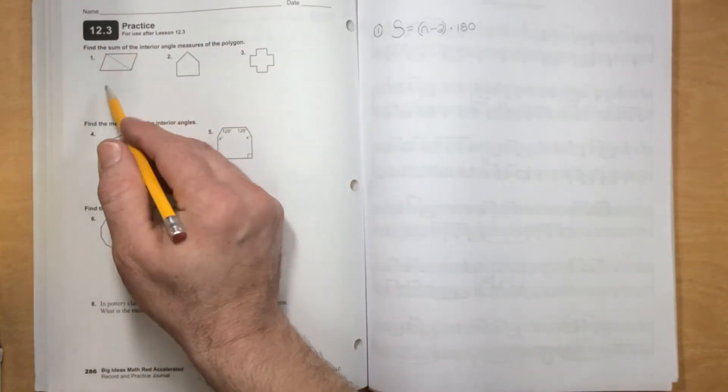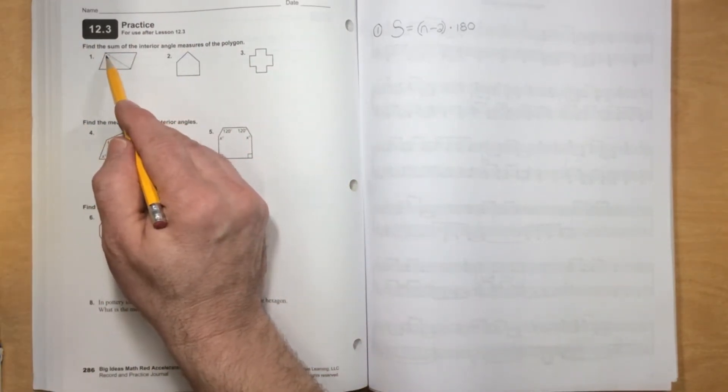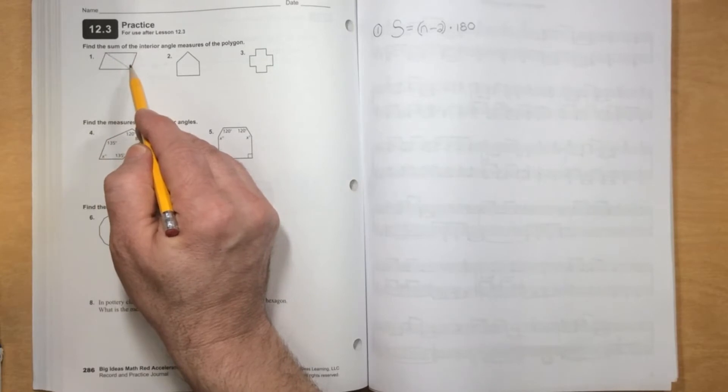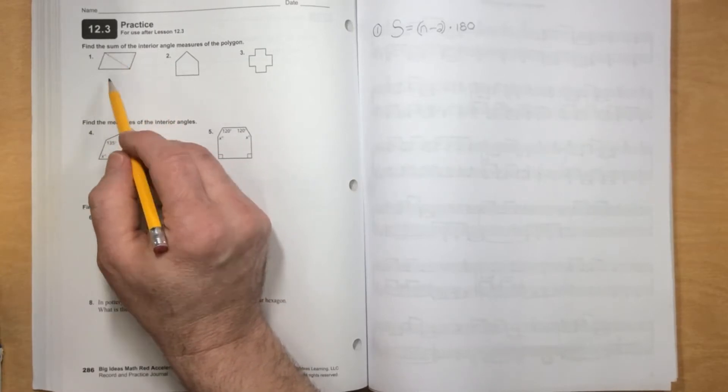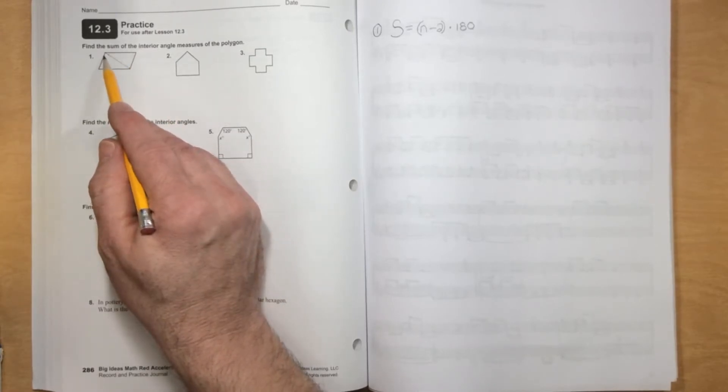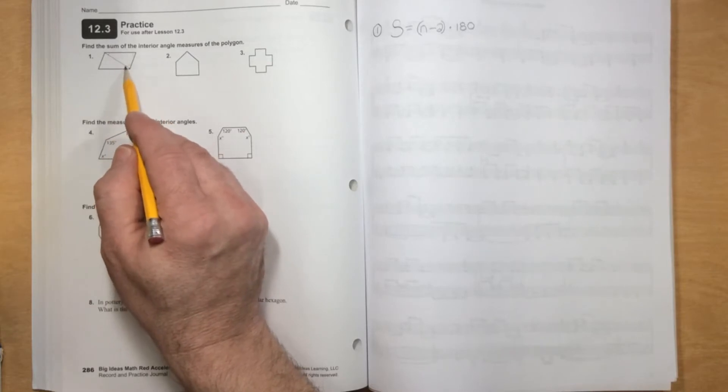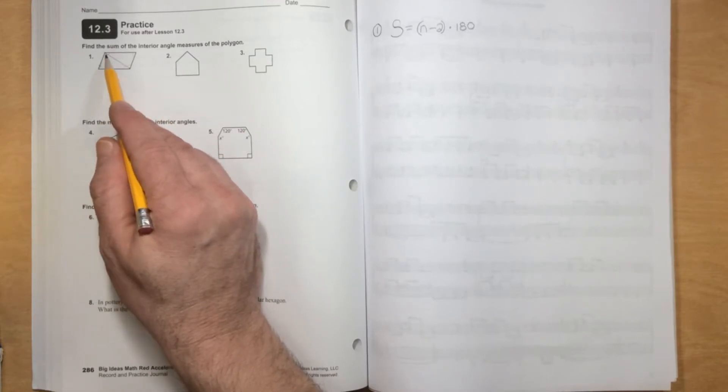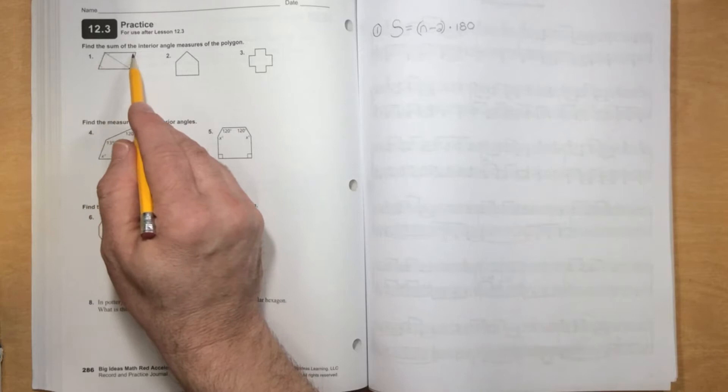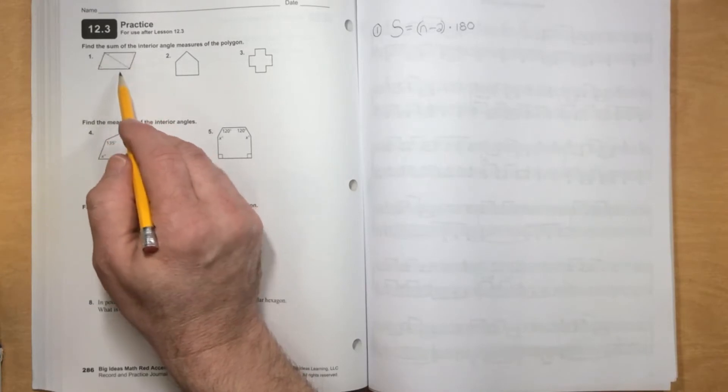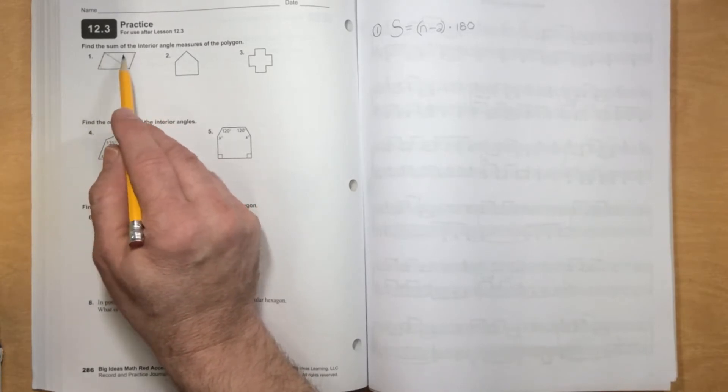And what I created was two triangles. So I would have this angle, this angle, and this angle. And we know that triangle is 180 degrees, or the sum of its angles. And then I would also have this angle, this angle, and this angle. Well, if I take all six of those angles, it would be 180 times 2.